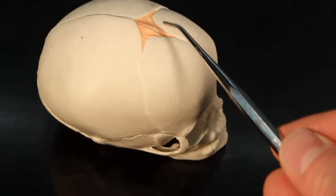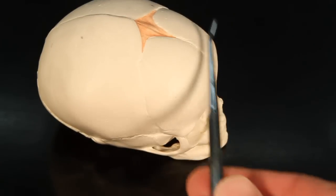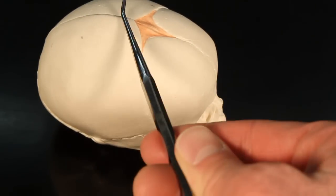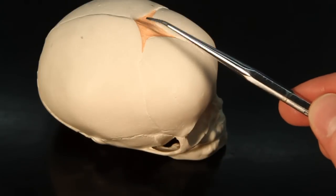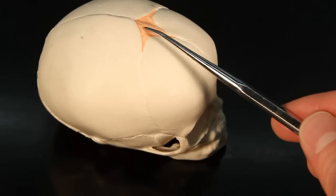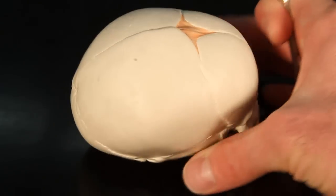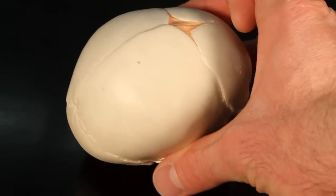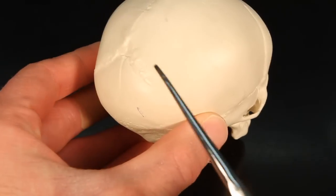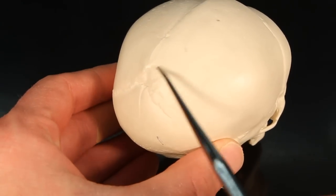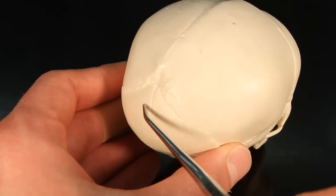First off, this right here between the frontal bone and parietal bones, this is going to be your anterior fontanelle. If you go towards the back of the skull, you're going to see you have your posterior fontanelle between the parietal and occipital bones.